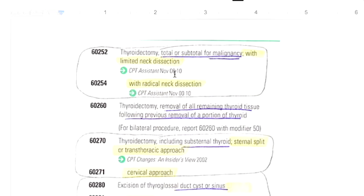And then if you are doing a total or subtotal for malignancy, so there's a cancer with a limited neck dissection, then you're going to go beyond that. You're going to get into these 60252 codes. So limited neck dissection versus radical neck dissection.